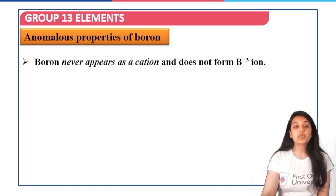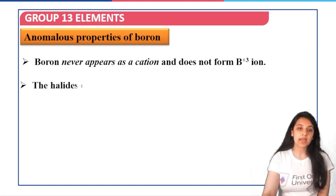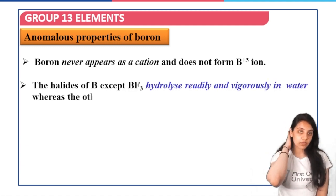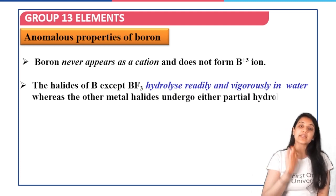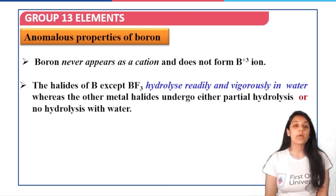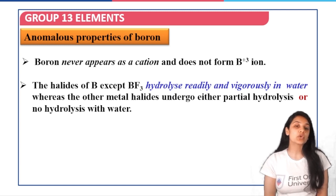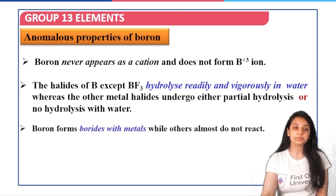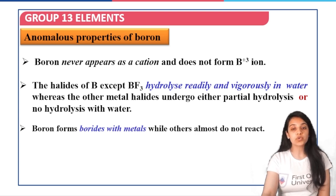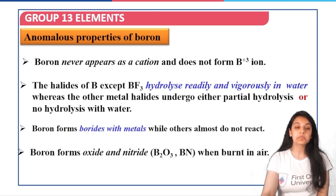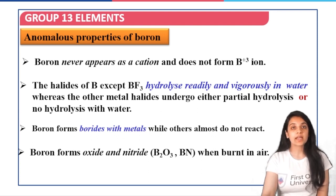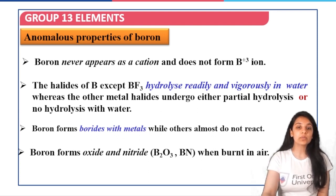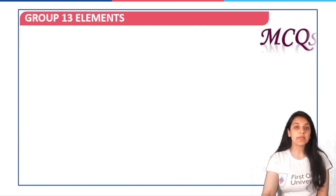Boron will never appear as a cation — it will not form B3+ ions. The halides of boron, except BF3, hydrolyze readily and vigorously in water, whereas other metal halides undergo either partial hydrolysis or no hydrolysis at all. Boron forms borides with metals while others almost do not react. When reacting with air, boron forms both B2O3 and BN.